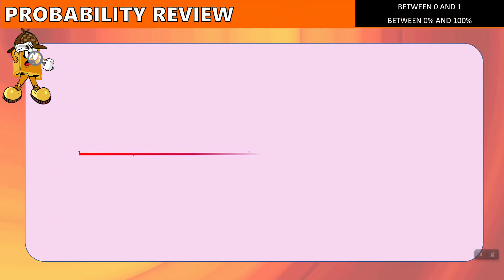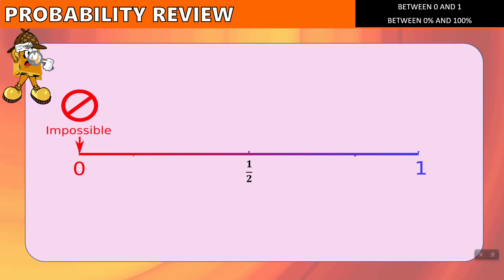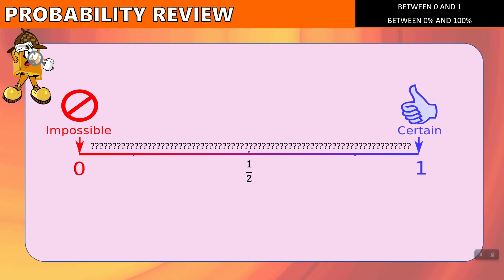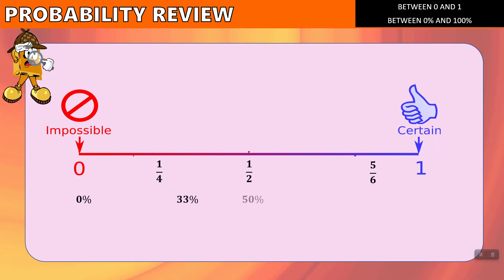In a previous video we mentioned that probability is written between the numbers 0 and 1, or between 0% and 100%, and we showed a number line that went from 0 to 1. In the middle is a half. A probability of 0 means that event is impossible. A probability of 1 means that event is certain to happen, and everything else falls in between. We have fractions and percentages between 0 and 100. In the middle, at a half, we call that an even chance.